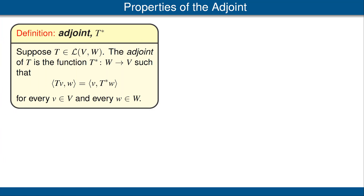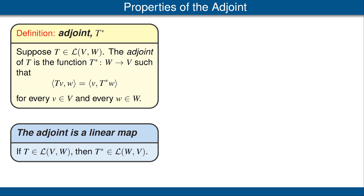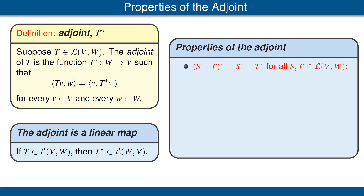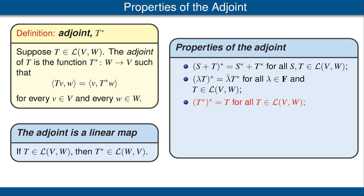Now we want to display some properties of the adjoint. The definition of the adjoint is displayed from the previous slide. The first property is that the adjoint is a linear map — in other words, T star is a linear map from W to V if T is a linear map from V to W. We have a whole other set of properties: the adjoint of a sum is the sum of the adjoints; the adjoint of a scalar multiple of T is the complex conjugate of the scalar times the adjoint of T; the adjoint of the adjoint of T is equal to T; and the adjoint of the identity operator is the identity operator. All of these are fairly easy to verify. Please try to do them yourself — pause the video to do that, and if you get stuck, look at the book.